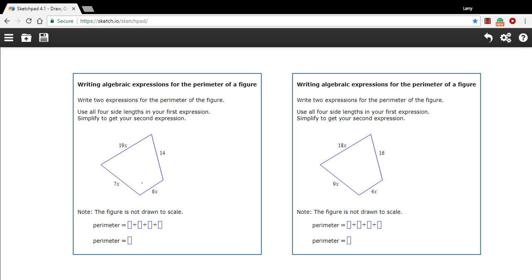A perimeter, remember, is just all of these sides added together. So I could say this is 19x plus, and I'll just do all the x's first, 7x plus 6x plus 14.